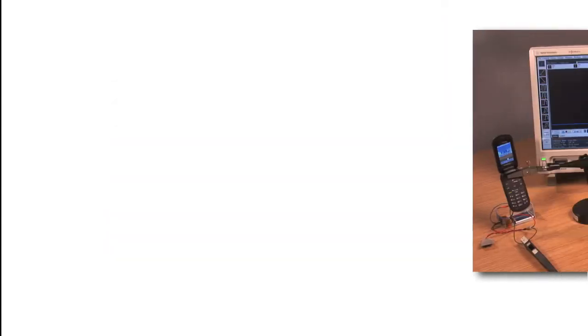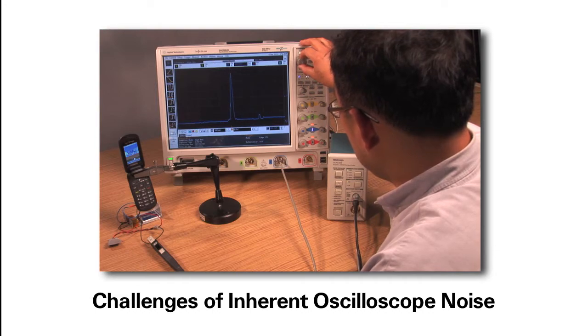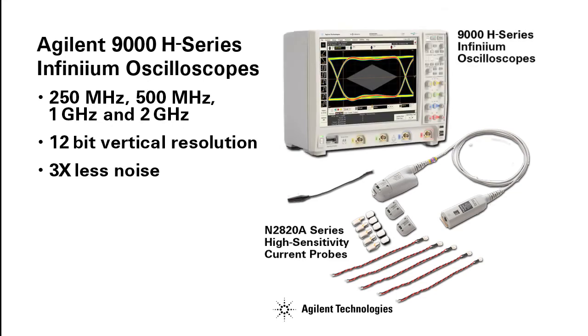Engineers rely on accurate current measurements, but a scope's inherent noise is often a key contributor to measurement inaccuracy when viewing small signals. Agilent's N2820A series probes, together with Agilent's new Infinium 9000H series oscilloscope, delivers the ultimate high definition measurement solution.